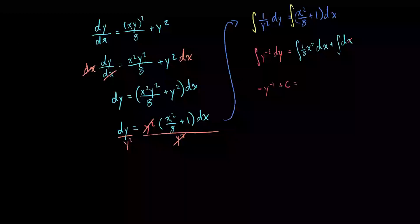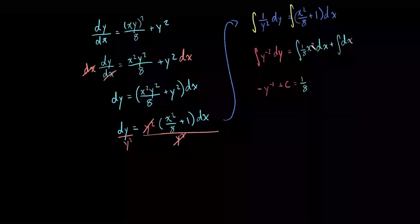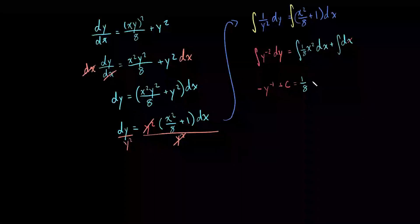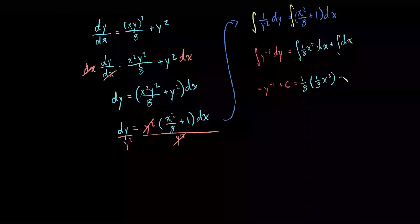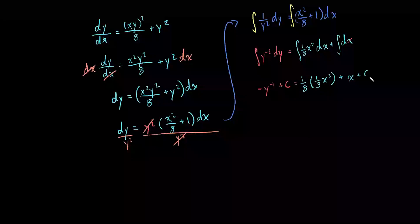From here, we're going to integrate the right-hand side. We can take out the constant. We're going to add 1 to the power of x squared, so we're going to have a third power and divide by the new power, giving us 1 third. The integral of dx is just x. Add our constant c.